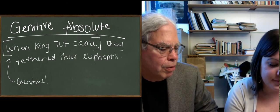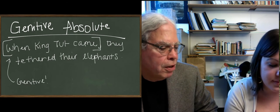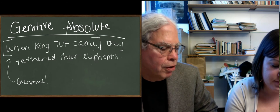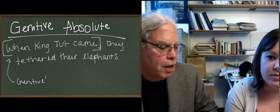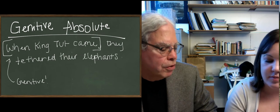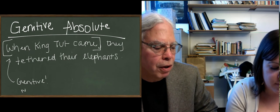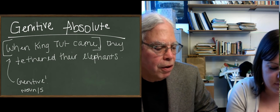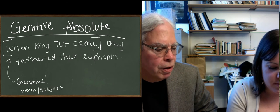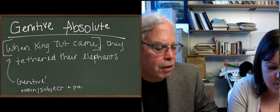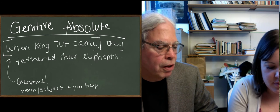What you do when you want to make a grammatically separate subordinate clause into a participial clause is you put the noun that's the subject of the subordinate clause in the genitive case, and therefore the participle that agrees with it is also going to be in the genitive case.